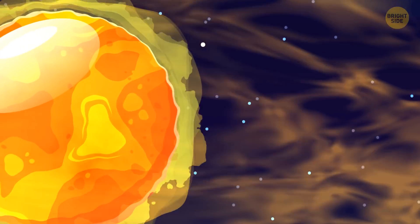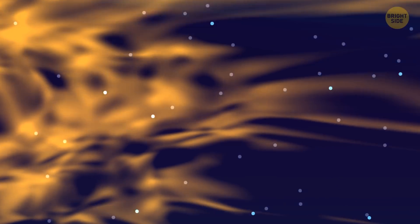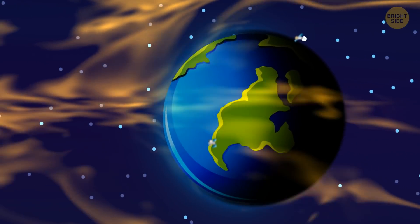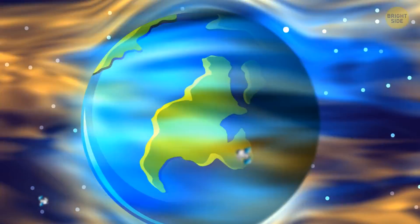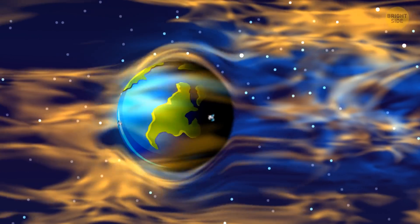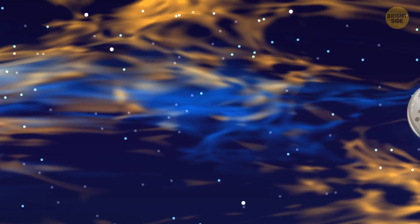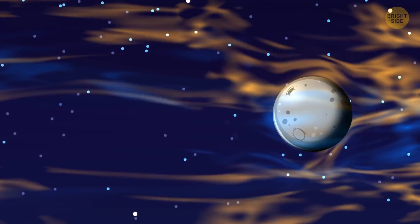The solar wind brought it there. The wind from our warm star moves at an extremely high speed. It scrapes oxygen from the upper parts of our atmosphere and carries it further through space. Eventually, the wind with the oxygen molecules reaches the Moon.